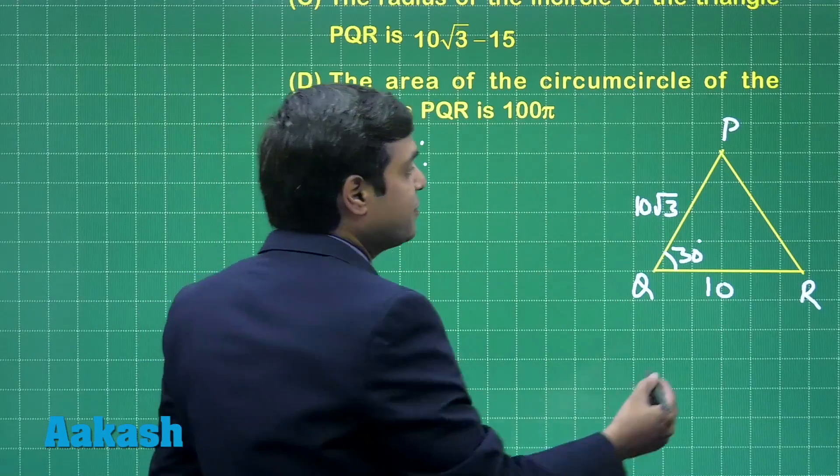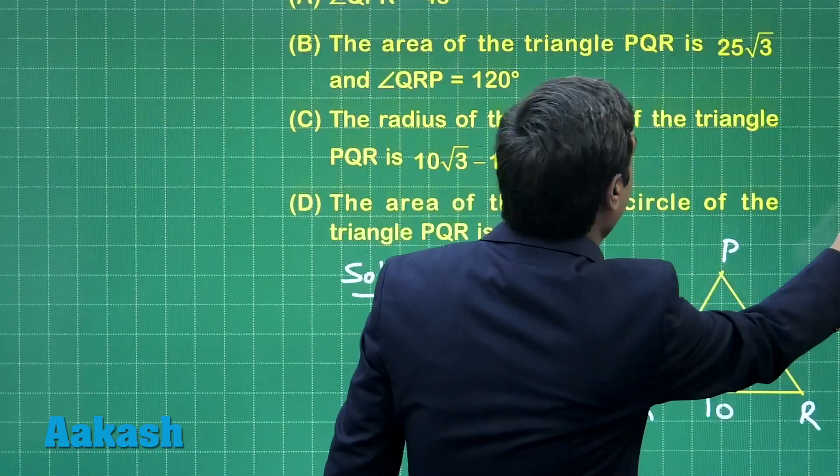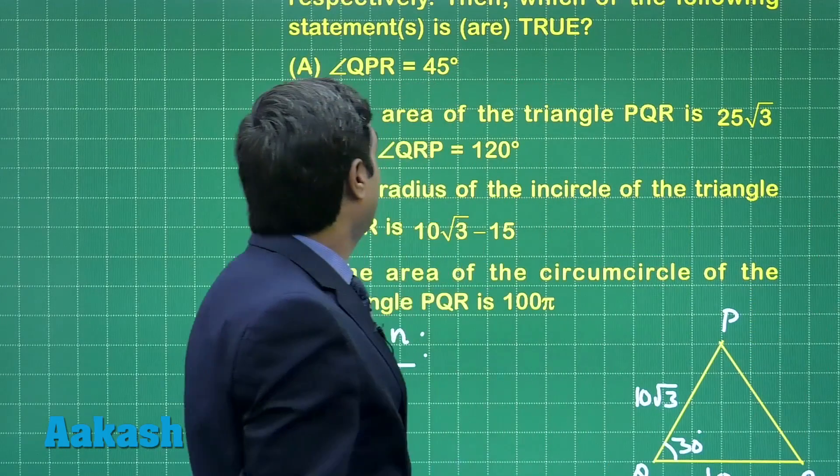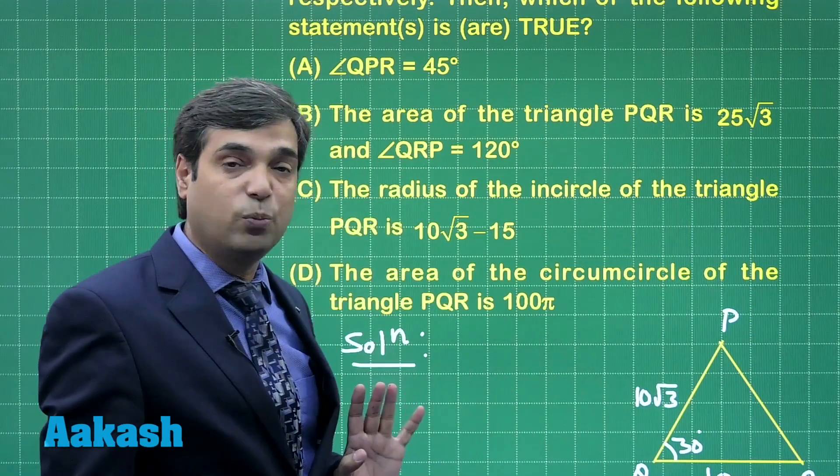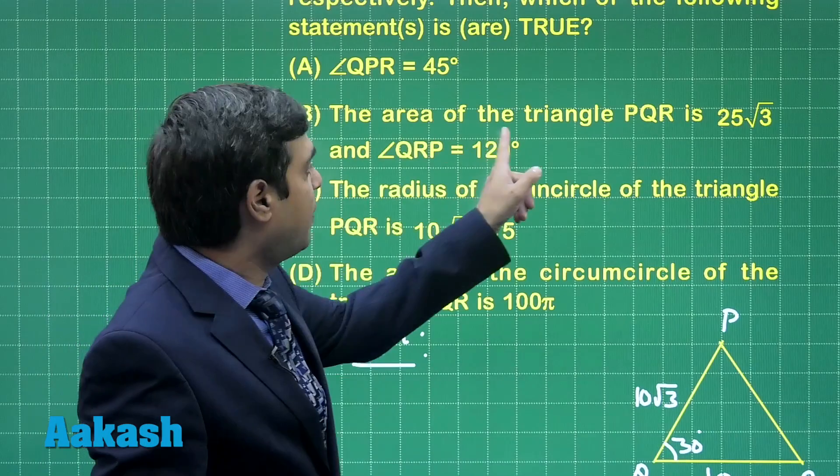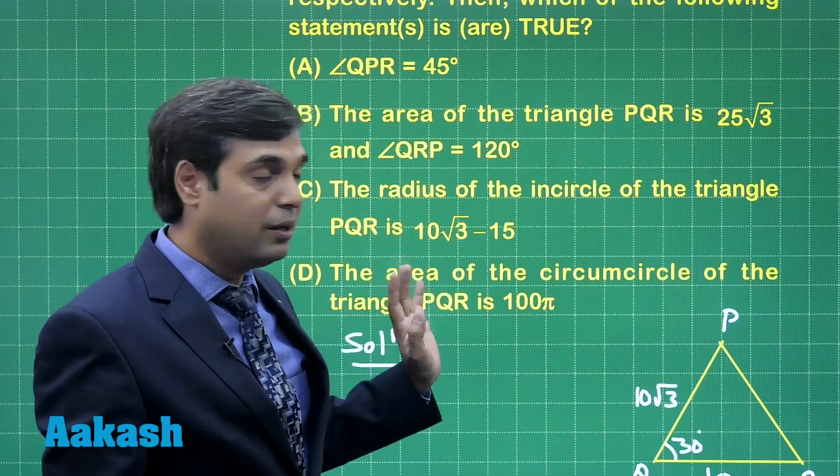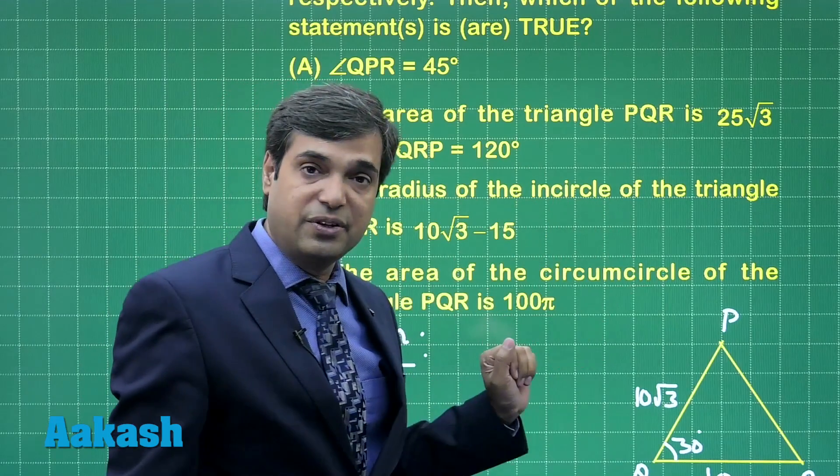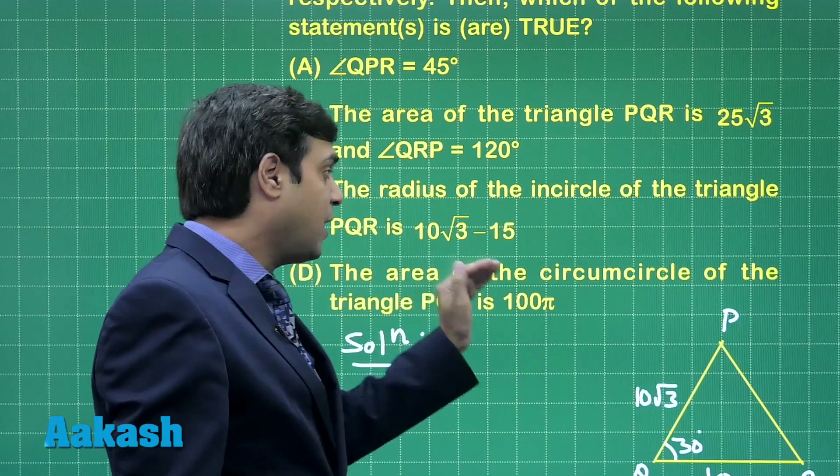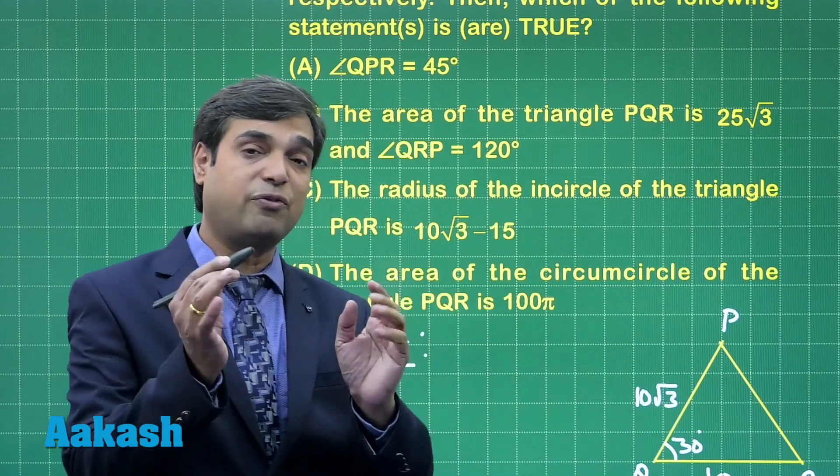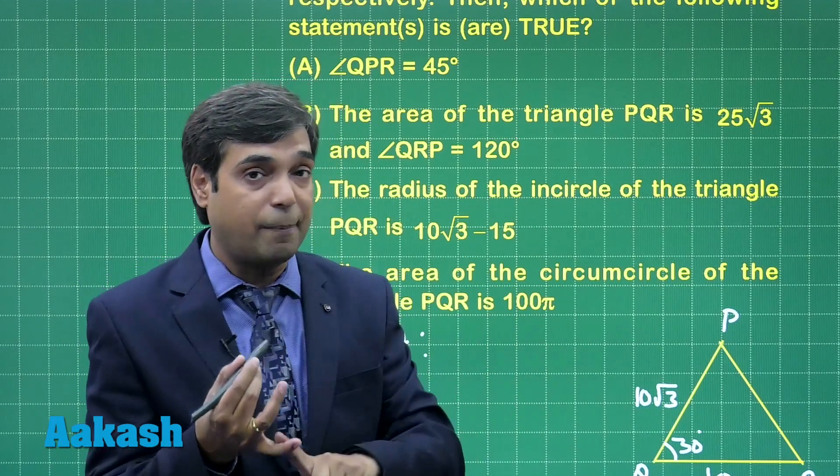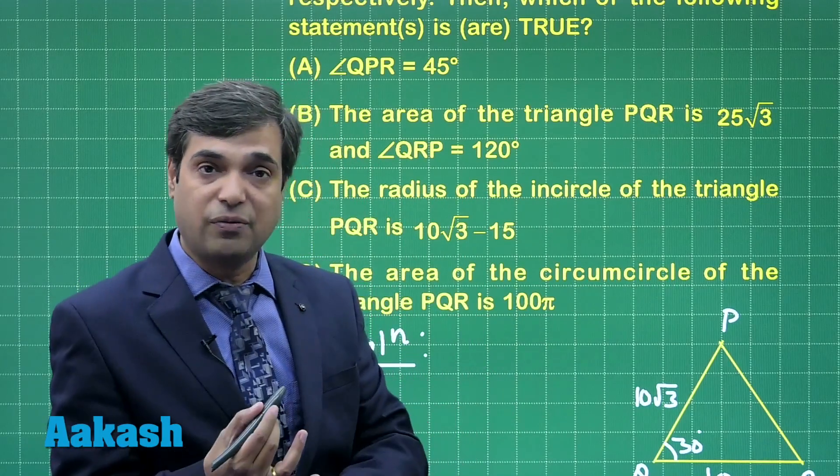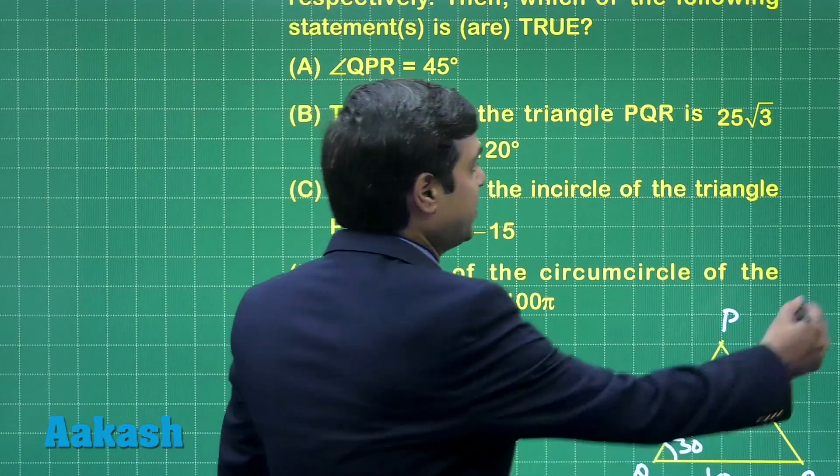Now let us check what we have to find in this question. Looking at 4 options, first they are talking about angle QPR, they are also talking about area of the triangle PQR, question is also discussing about radius of incircle of the triangle as well as area of the circumcircle. Meaning I have to find small r, I have to find capital R, I have to find area of the triangle, all these parameters.